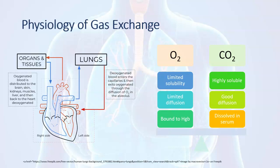Carbon dioxide has good diffusion characteristics — it is transported dissolved in the serum. It's produced in the tissues and transported back to the lung for excretion. Because it has good diffusion capacity, thickening of the alveolar capillary membrane has less effect on the excretion of carbon dioxide and its transfer from the blood to the alveoli.